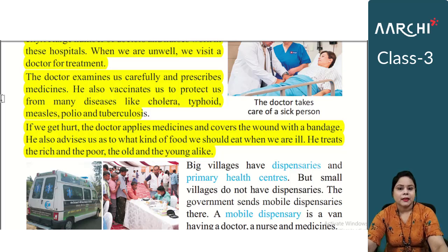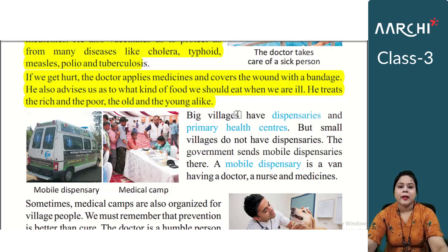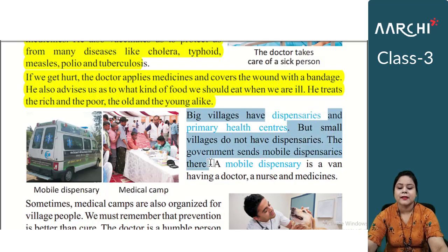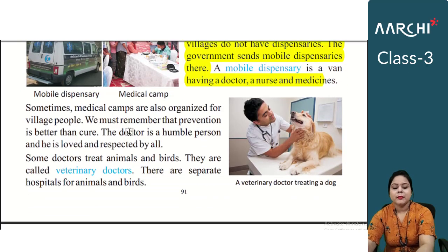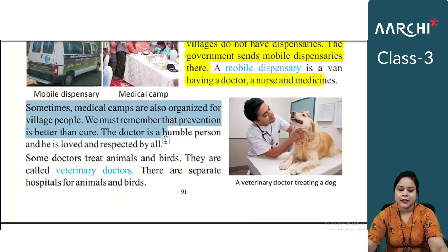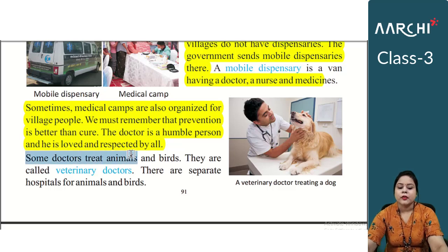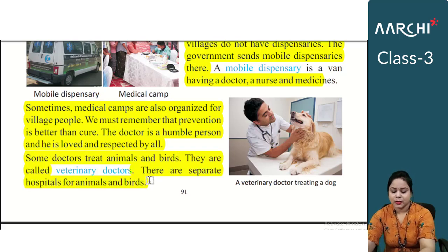But in small villages, they don't have dispensaries, so the government is providing mobile dispensaries so that people can also get proper medical treatment. The mobile dispensaries have a van with a doctor, a nurse, and medicines. Sometimes medical camps are also organized for village people. Doctors are humble persons who treat everyone equally with love and respect. Some doctors treat animals and birds too — they are called veterinary doctors, and there are separate hospitals for them.